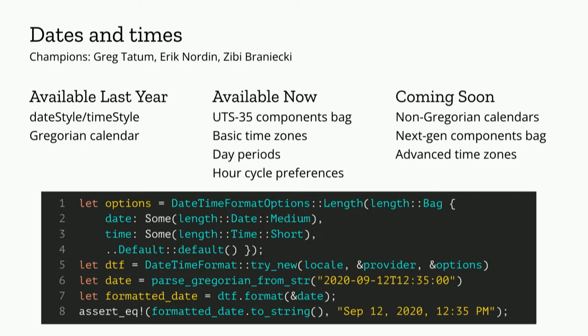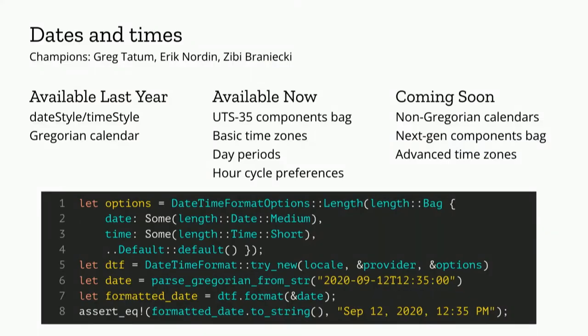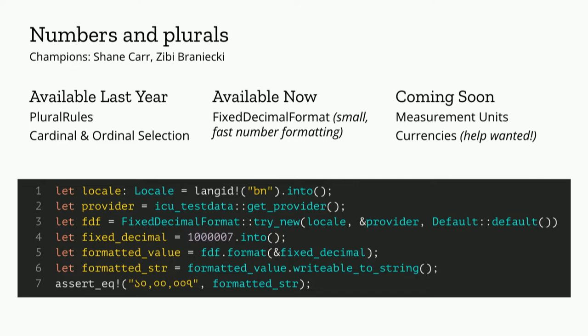I'm going to do a laundry list of all the things you can do with ICU4X now and the things you'll be able to do very soon. First, dates and times: Greg, Eric, and ZB are the champions behind this. We support dates and times formatting. In ICU4X, we support date style, time style, basic time zones, hour cycle preferences, and UTS 35 style component bags. Very soon we have non-Gregorian calendars, next generation component bags, and advanced time zones coming. You can already do this in ICU4X — it already works and runs.